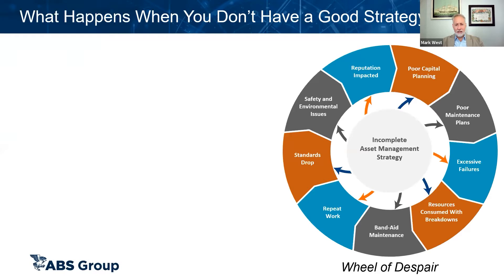You can start anywhere you want around what we call the wheel of despair. Poor maintenance planning means you end up getting consumed with breakdowns, you have a lot of Band-Aid maintenance, repeat work, your standards end up dropping, and you really end up with a lot of safety and environmental issues, as well as your reputation gets impacted. If we don't have a complete and interconnected plan for managing our assets, things quickly spin out of control, and we end up in a state of chaos.